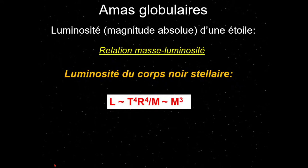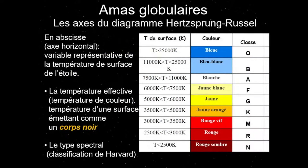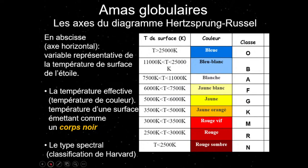En abscisse du diagramme HR, on peut prendre la température effective ou la classe spectrale — la classification d'Harvard. Les étoiles très chaudes apparaissent bleues, les plus froides sont rouges. On se souvient de la phrase mnémotechnique : « Oh Be A Fine Girl, Kiss Me » — les types O, B, A, F, G, K, M. Le Soleil est de type G. On peut aussi utiliser d'autres grandeurs en abscisse.